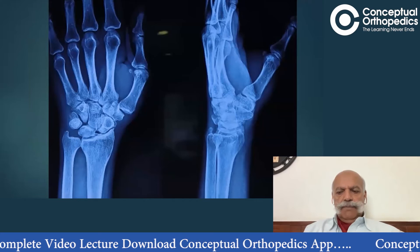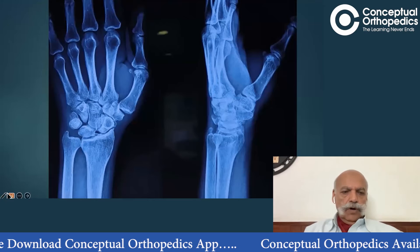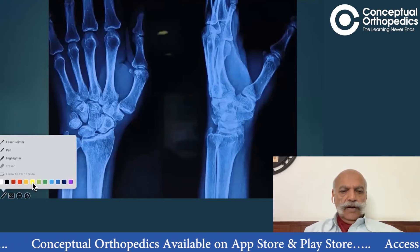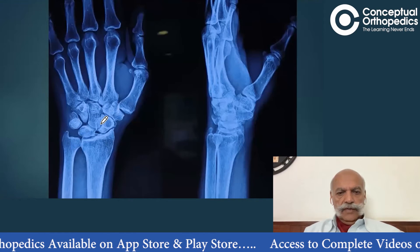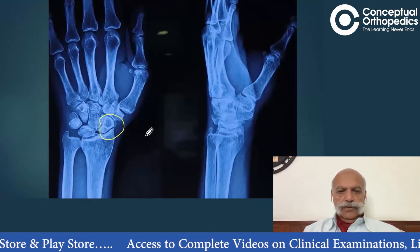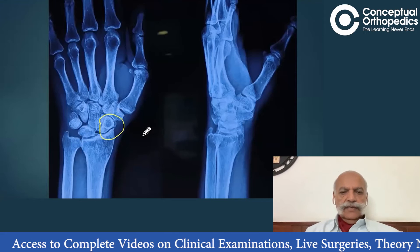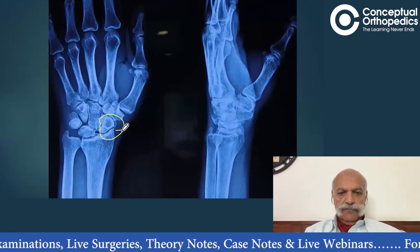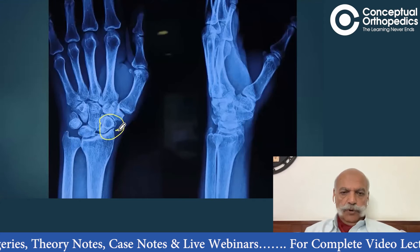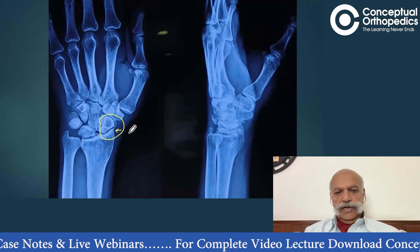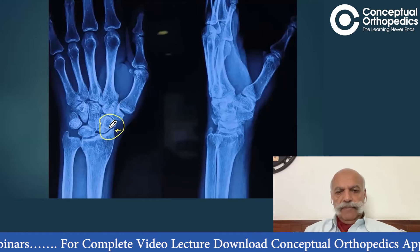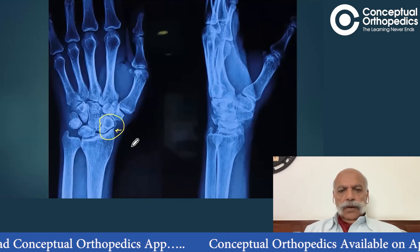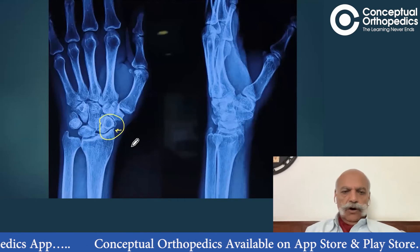The X-ray of the left wrist showed what we had discussed previously. If you look at this particular area of the wrist X-ray, you can conclude that there is a radiocarpal arthritis, shown by an osteophyte. This arrow is pointing towards the osteophyte. This osteophyte was creating a sort of impingement on the scaphoid, and we felt this was the cause of the pain.